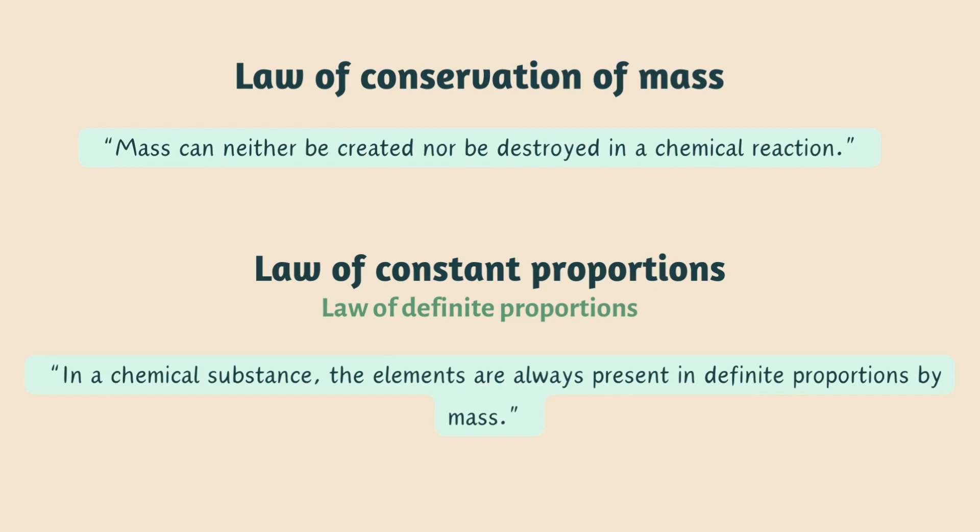Second one is law of constant proportions, also known as law of definite proportions. For example, we have water that is H2O, a compound of two elements, hydrogen and oxygen. You take any source of water or any amount of water, the ratio of mass of hydrogen to that of oxygen will always be the same, it will be a constant. The law of constant proportions states that in a chemical substance, the elements are always present in definite proportions by mass.